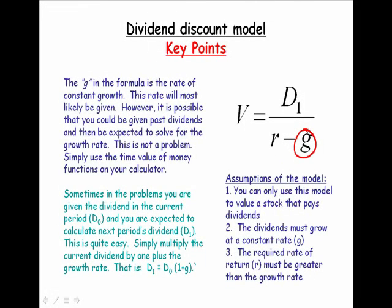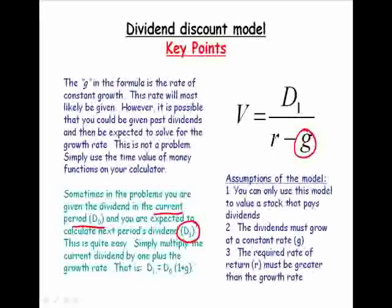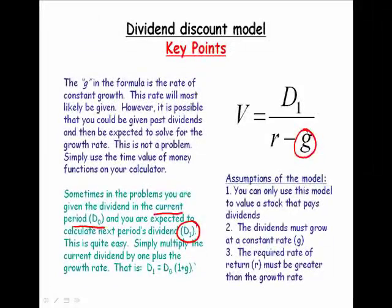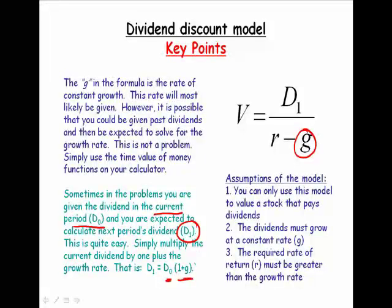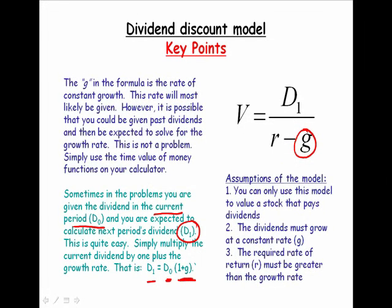Sometimes in these problems, as we saw in a few of our questions, you're given the current dividend, D0, and you're expected to solve for next period's dividend. That's not a problem. In fact, it's quite easy, isn't it? Take the current dividend, D0, times 1 plus the growth rate to get D1.